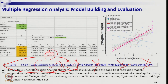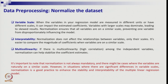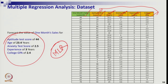Because anxiety score, experience, and college GPA are not significant, this is the extension of multiple regression with larger datasets. Now, one more important point: look at this dataset — aptitude test score, age, anxiety score, experience, and college GPA all have different units and different scales.